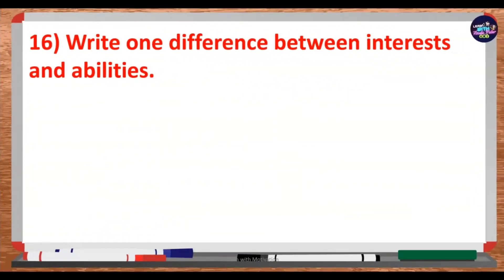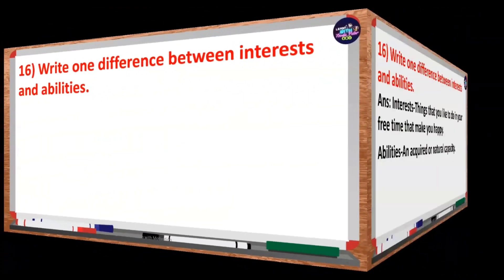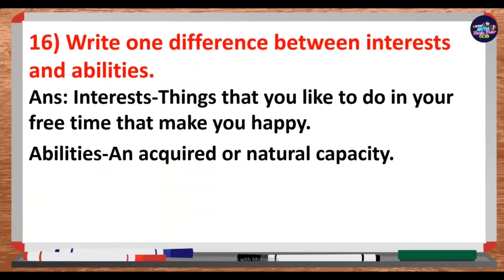Write one difference between interest and ability. Interest refers to things that you would like to do in your free time that make you happy. Ability is an acquired and natural capability.